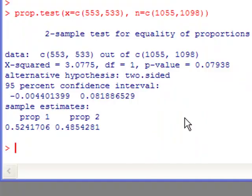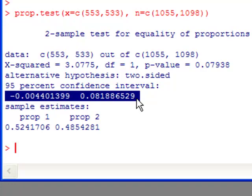Here we get a two-sample test on the difference in proportions. Specifically, we're interested in the confidence level or the confidence interval. We have a 95% confidence interval that goes from negative 0.004 to 0.0818.